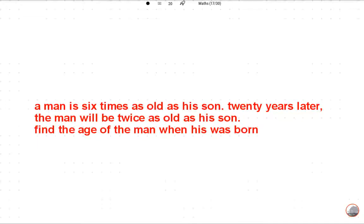Please subscribe to this channel. Okay, let's read this question. A man is six times as old as his son. Twenty years later, the man will be twice as old as his son. Find the age of the man when he was born.